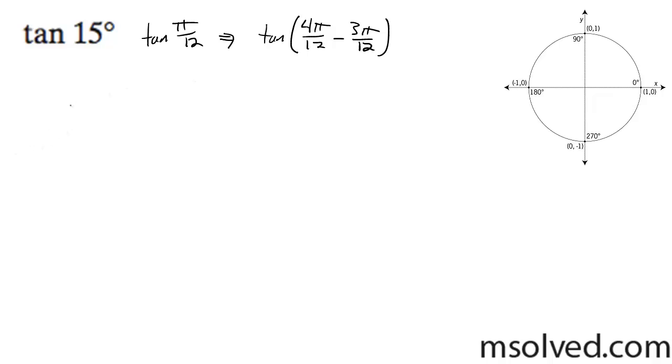So what I'm going to do here next, I come down here and I can rewrite this tangent. This reduces down to π over 3 minus π over 4.